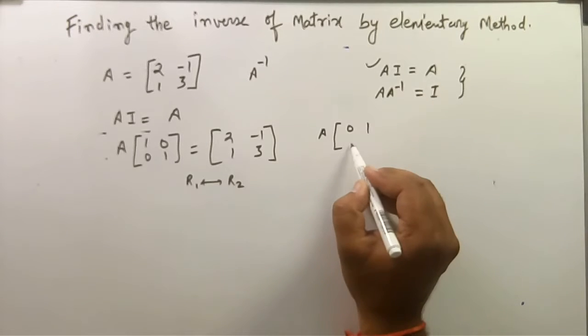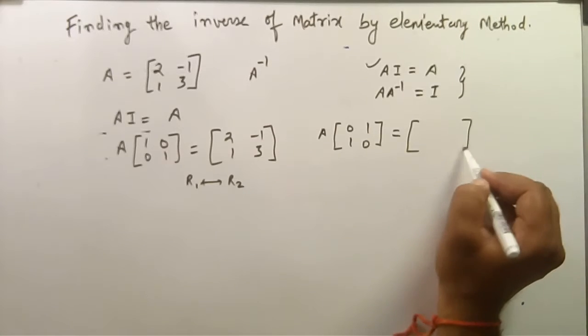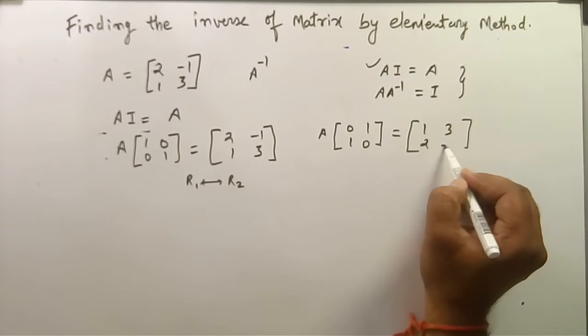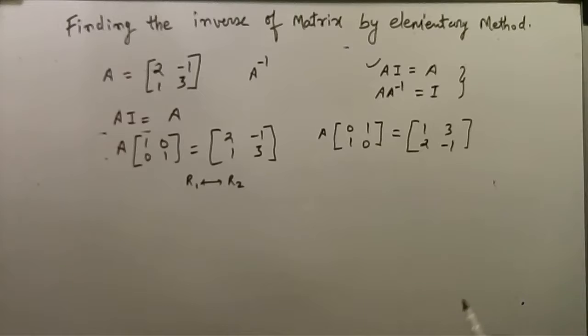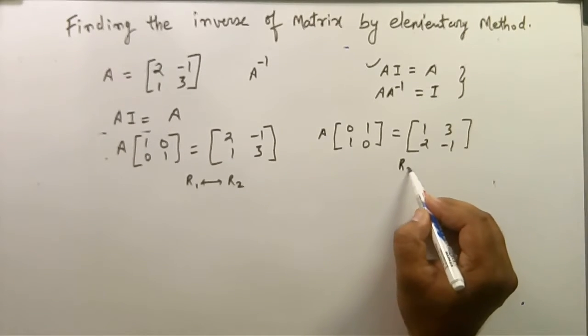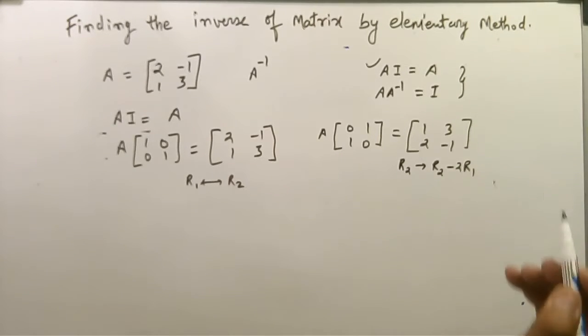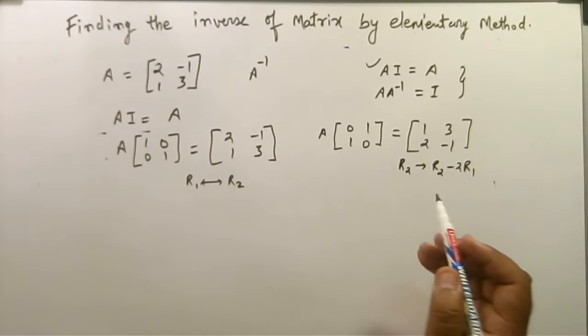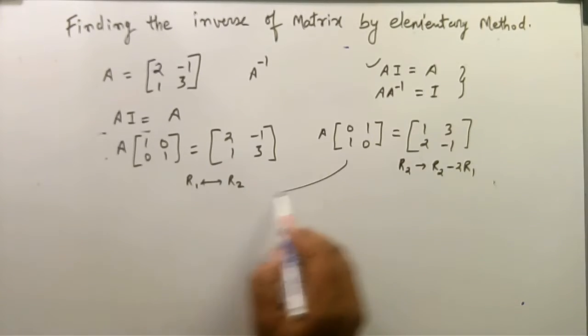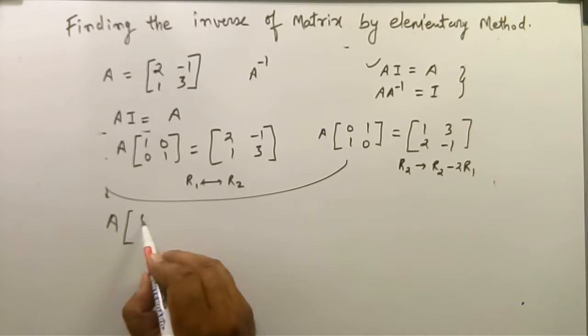Here will be 0, 1 and 1, 0 and 1, 3, minus 2. The second operation is R2 minus 2R1. We will get 0, 1, 1, minus 2.